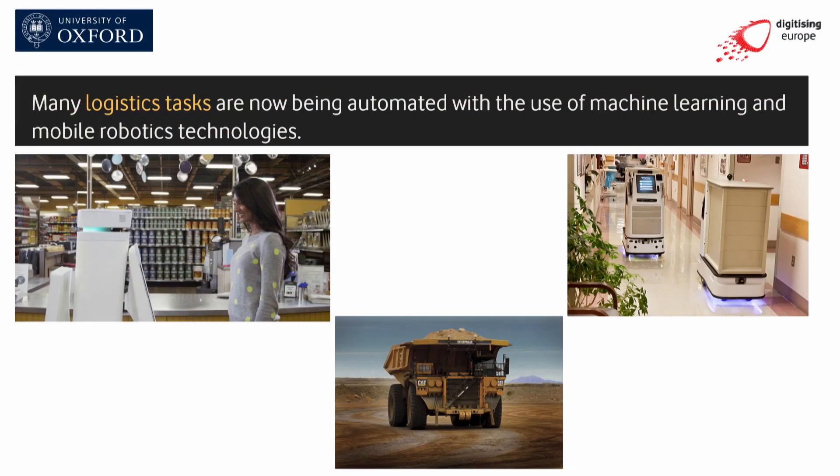Technologies we're already seeing include the QC bot, automating the task of delivering meals and medicines around a hospital. We're going to see the rise of autonomous mining vehicles. And this is a robot deployed by the Orchid Supply Hardware Store in California, really serving as an autonomous sales assistant.